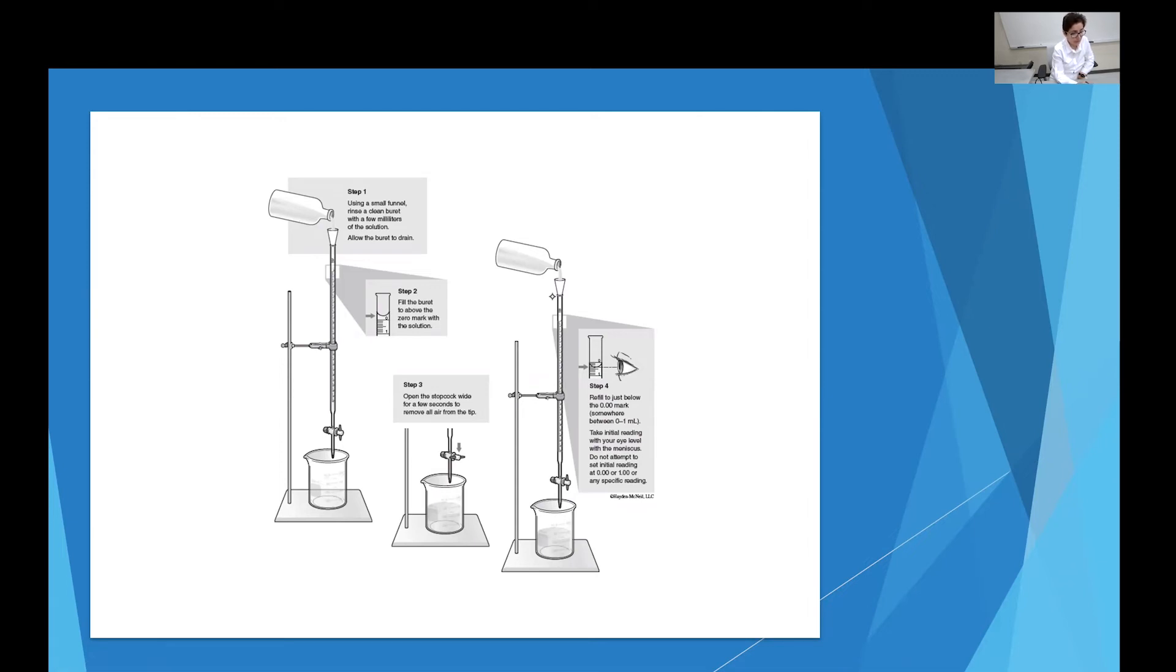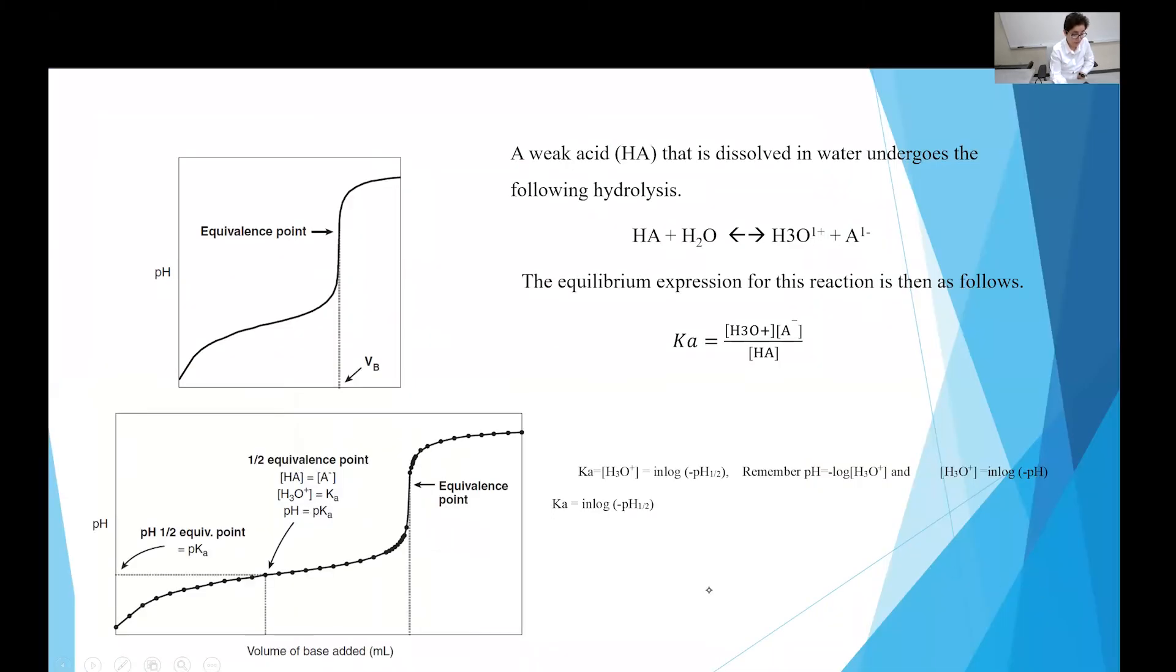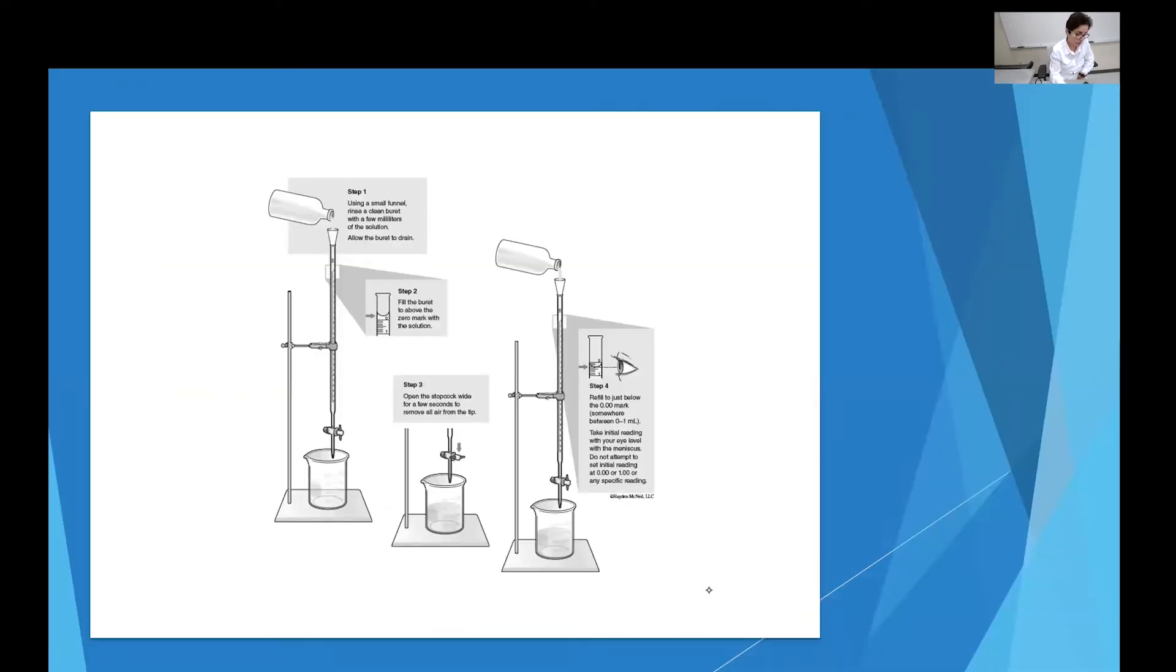This diagram shows how to fill up the burette, how to look. You're looking for the lowest point of the curve and you want to make sure there is no air bubbles in the tip of the burette. The burette needs to be conditioned. That means you have to wash it with water first. Then you wash it with sodium hydroxide.